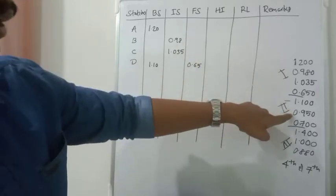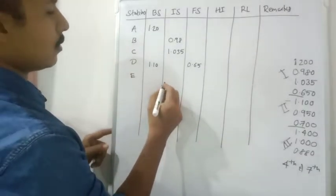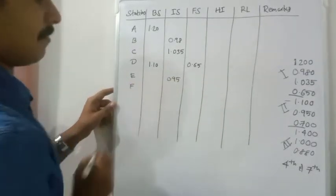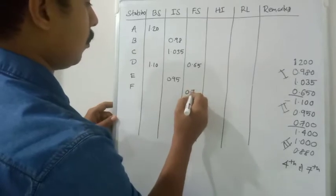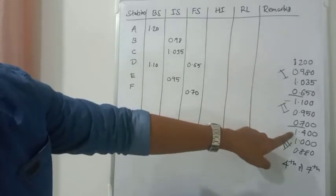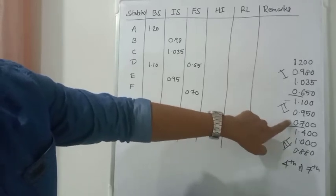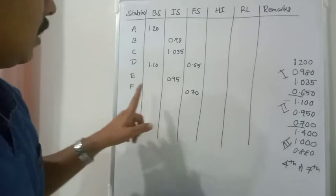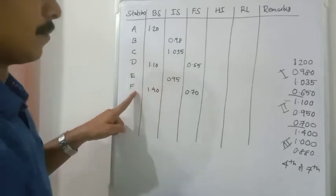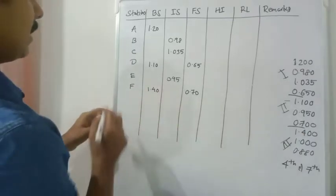From readings one through seven, after the seventh reading the instrument was shifted. So reading E = 0.95 will be an intermediate sight. F = 0.70 is the last reading before the instrument shift. Then 1.40 will be taken as the first reading of the third setup — the back sight on station F — and the last reading from the previous setup was F = 0.70.